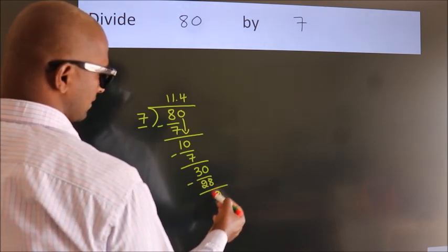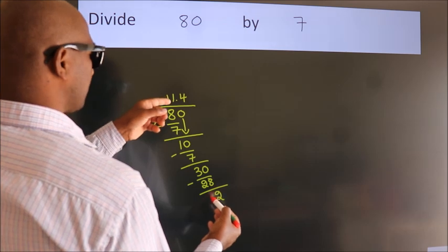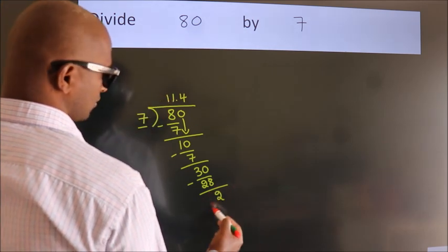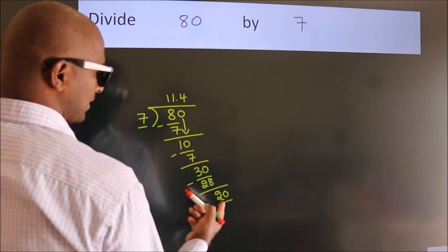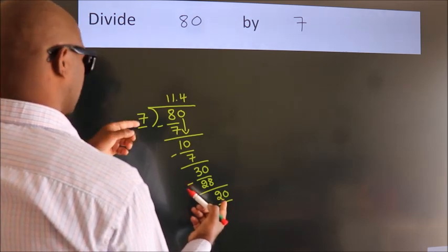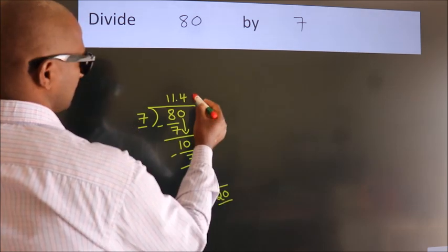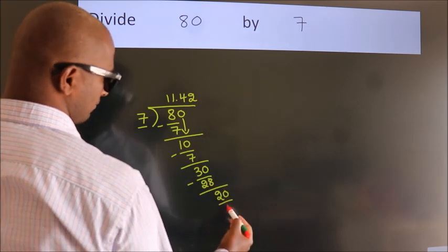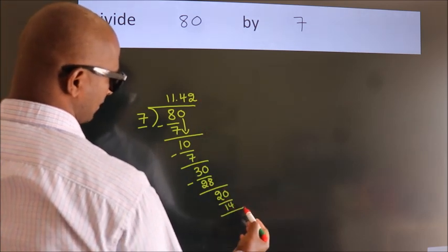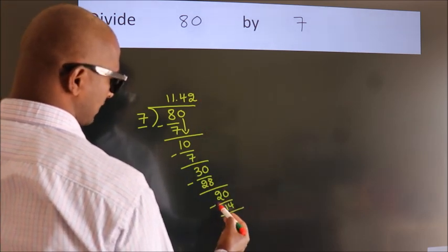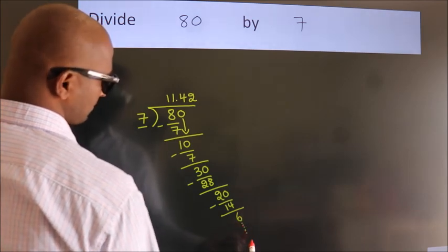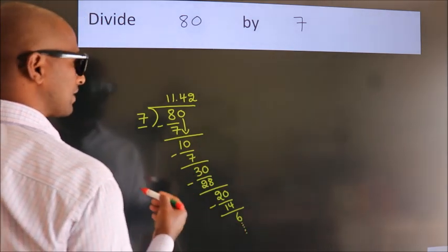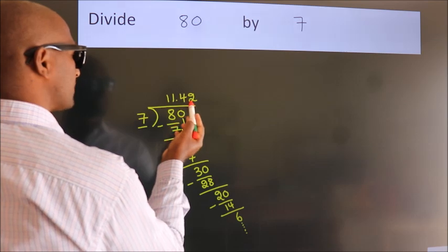After this, we already have the decimal, so directly take 0, so 20. A number close to 20 in the 7 table is 7 times 2, which is 14. Now we subtract, we get 6, and the division continues. It is enough if we do up to 2 decimal places.